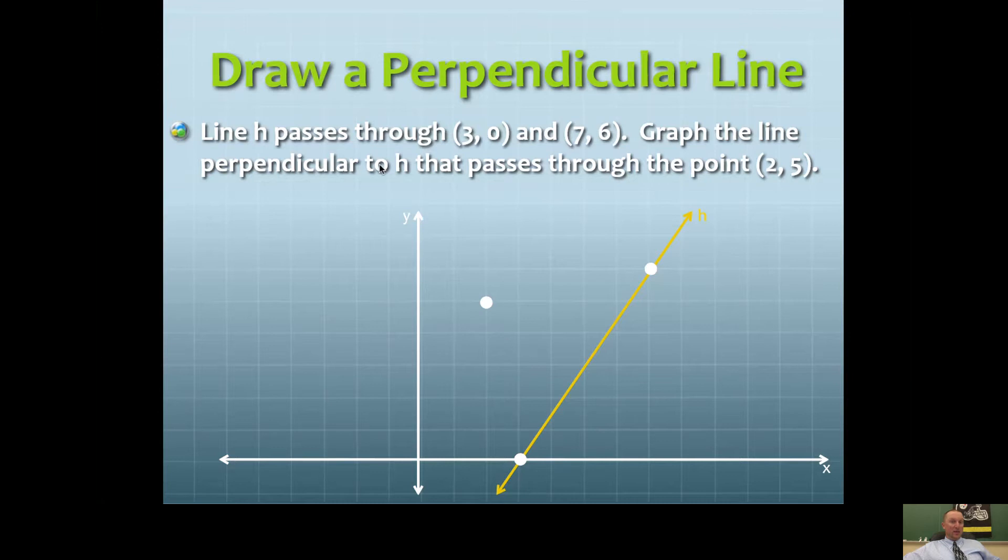Graph the line that's perpendicular to this line that passes through the ordered pair (2,5), that's this guy.